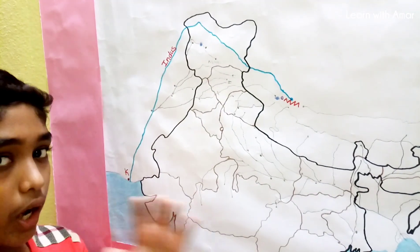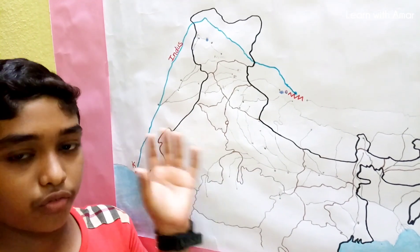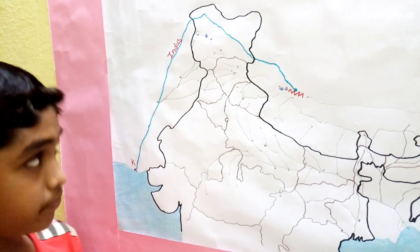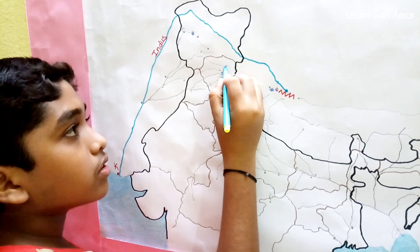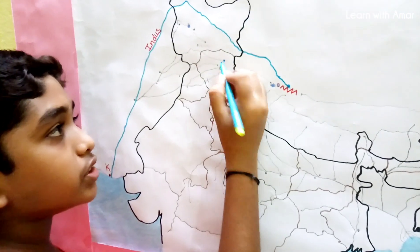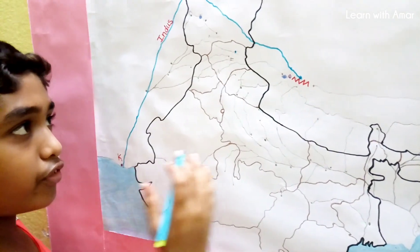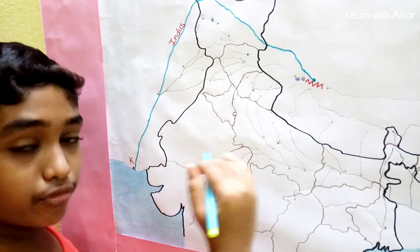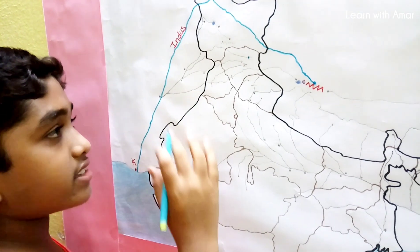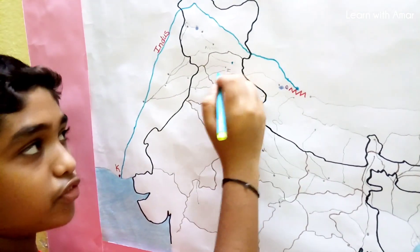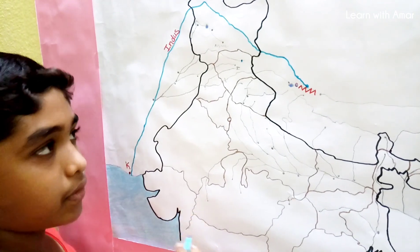Now let us look at the tributaries of Indus. There are mainly five left bank tributaries. The first one is Chenab.